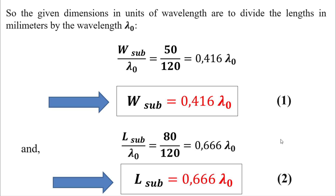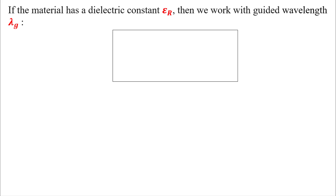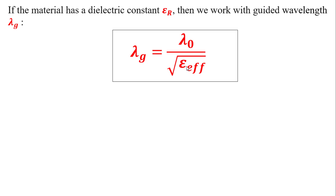The other case involves guided wavelength, where we consider the electric constant of the substrate. For antennas, couplers, or filters with electric substrates, we cannot work in free space but must work with guided wavelength. If we suppose the dielectric constant equals epsilon r, then lambda g equals lambda zero divided by the square root of the effective permittivity.